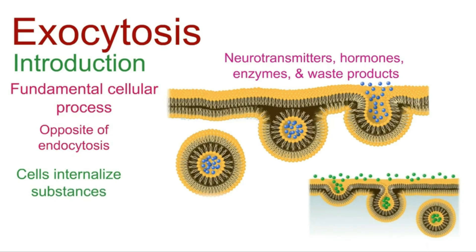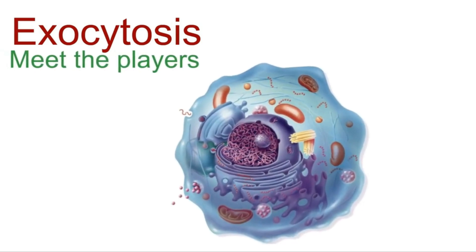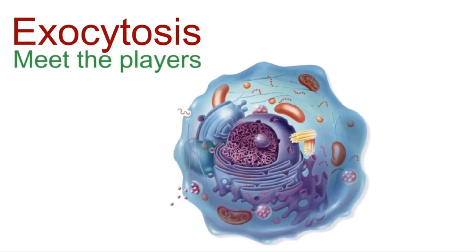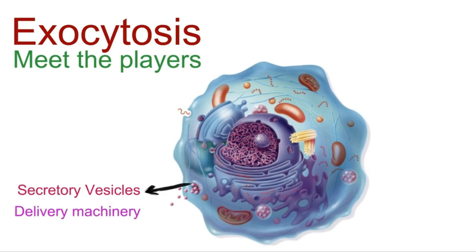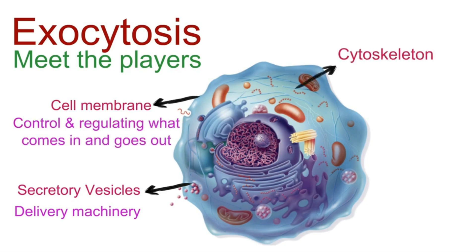Exocytosis is a crucial event happening in your cells every day. Imagine your cells as bustling cities with tiny workers inside. In this city, we have three main characters: first, secretory vesicles — like delivery trucks filled with important cargo; second, the cell membrane or plasma membrane — our city's border control, regulating what comes in and goes out; and third, the cytoskeleton — think of it as the city's roads, helping vesicles navigate to their destination.